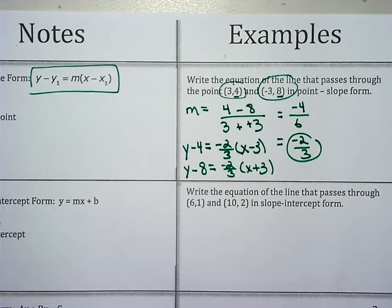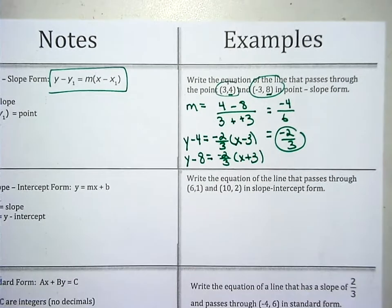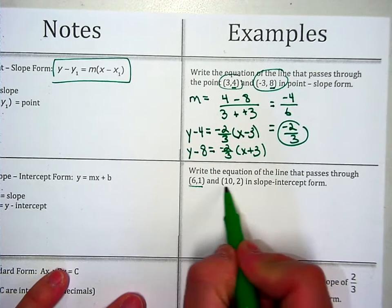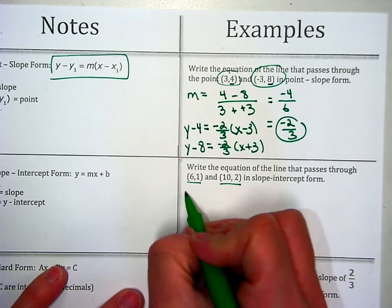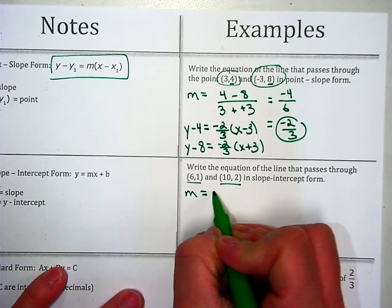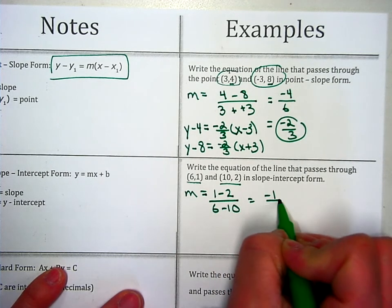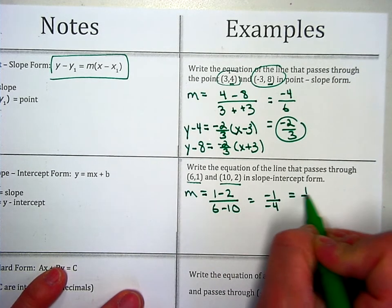The next form that we did is slope-intercept. So again, we need a y-intercept and we need a slope. So I look at the two points. I notice I don't have slope, so I'm going to calculate slope first. So 1 minus 2 over 6 minus 10, I get negative 1 over negative 4. I'm going to change it to a positive.